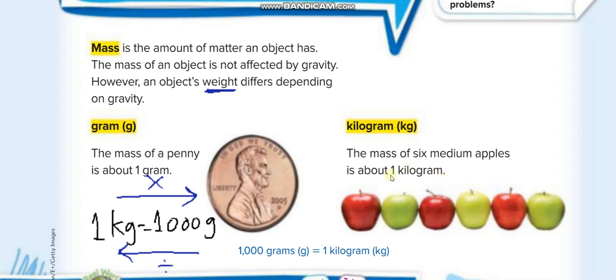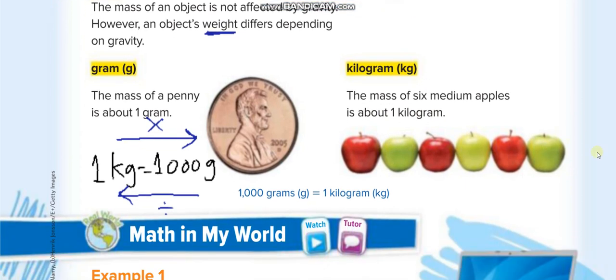Now, one kilogram is equal to 1,000 grams. If you want to convert from kilogram, one kilogram is equal to 1,000 grams. If you want to convert from kilograms to grams, we multiply by 1,000. See guys, the arrow shows we are going from kilograms to grams, so we multiply by 1,000.